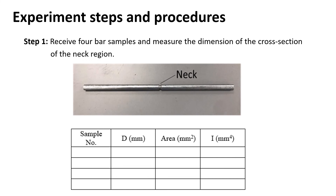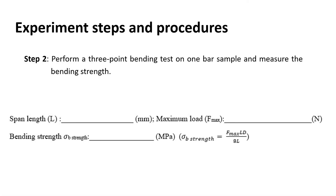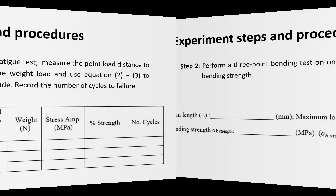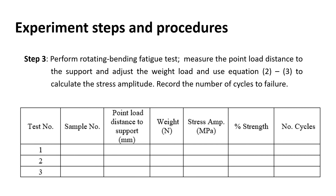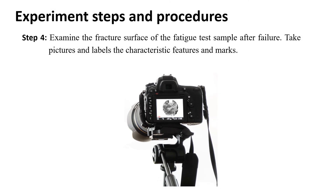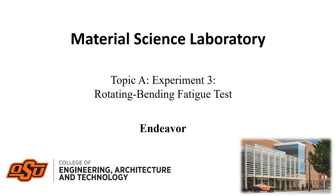Receive four bar samples and measure the dimensions of the cross-section of the neck region — remember to record data. Next, perform a three-point bending test on one bar sample and measure the bending strength, filling out the corresponding information. Step 3: perform the rotating bending fatigue test — measure the point load distance to the support, adjust the weight load, and use equations 2 and 3 to calculate the stress amplitude. Record the number of cycles to failure. Finally, examine the fracture surface of the fatigue test sample after failure, and take pictures labeling the characteristic features and marks.